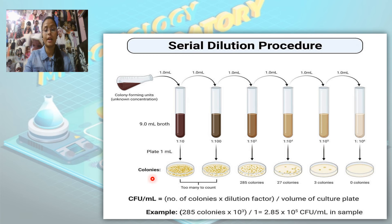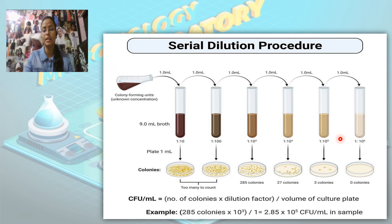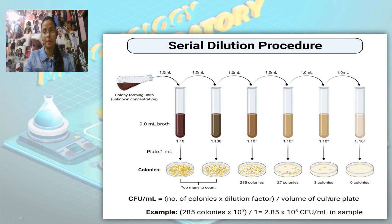As we can see, the number of colonies decreases as we decrease the concentration of the sample. We can find out the colony forming units per mL as: number of colonies multiplied by the dilution factor, divided by the volume of culture plated. For example, 285 colonies at a factor of 10 to the power 3, divided by a volume of 1 mL, equals 2.85 × 10^5 CFU/mL in the sample.